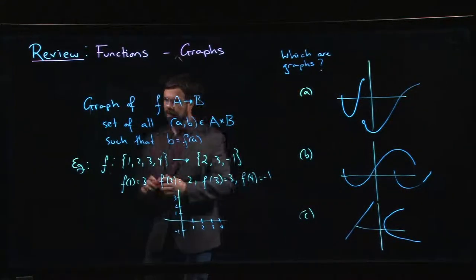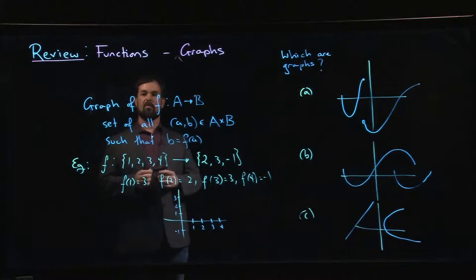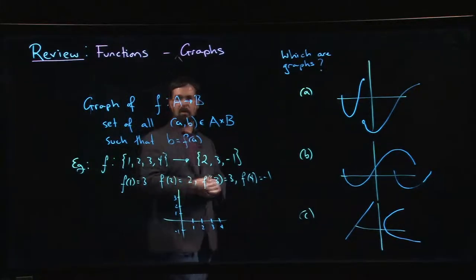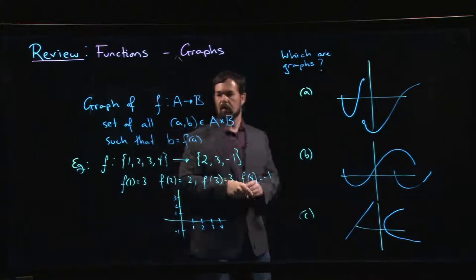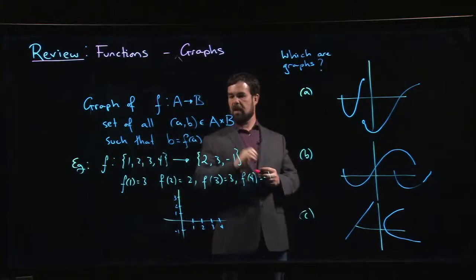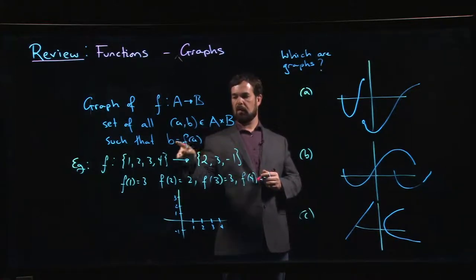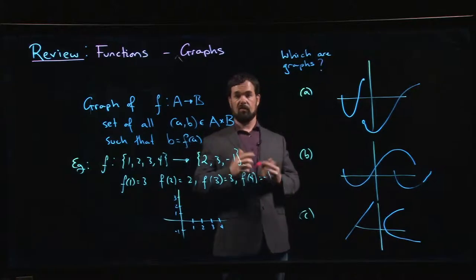Okay, so we introduced the notion of a graph in the previous video. I left the definition up here on the board. So somebody hands you a function, you can look at all the ordered pairs (a, b) where a belongs to A, b belongs to B—all the ordered pairs where b is associated with a through the function.